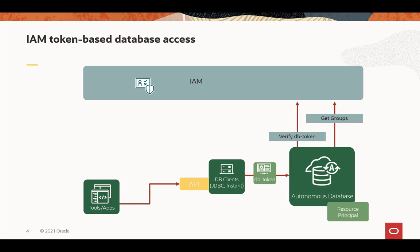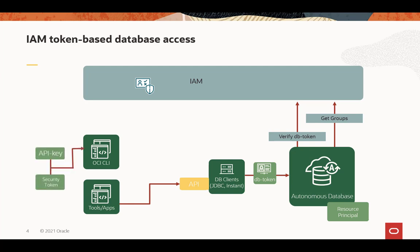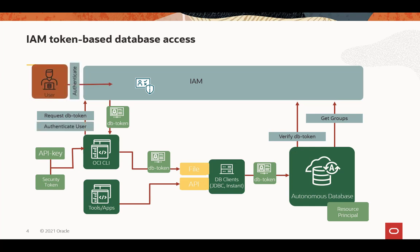If the tool or app is not updated to use the database token from IAM, then a helper app — the OCI Command Line Interface — can be used. It does the same thing: it takes the API key or security token and requests a DB token on behalf of the user. It will put that DB token inside a file location that the DB client can be configured to pick up, and it goes through the same process. The OCI CLI can also ask the user to authenticate and get the DB token from the authentication.